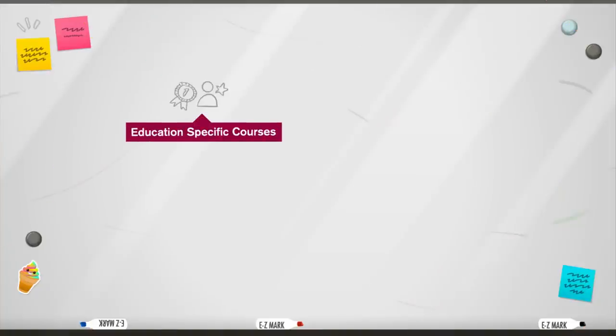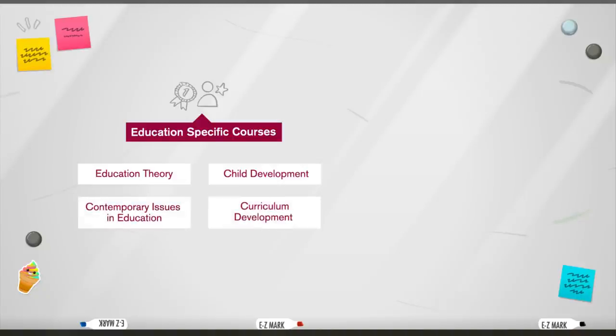Since there are so many interests and ways to tackle education, the courses you can take vary depending on what your school focuses on and whether you are pursuing a teaching credential or not. Your education-specific courses may include things like education theory, child development, contemporary issues in education, and curriculum development with a dash of broader topics like psychology, philosophy, and teaching methods.